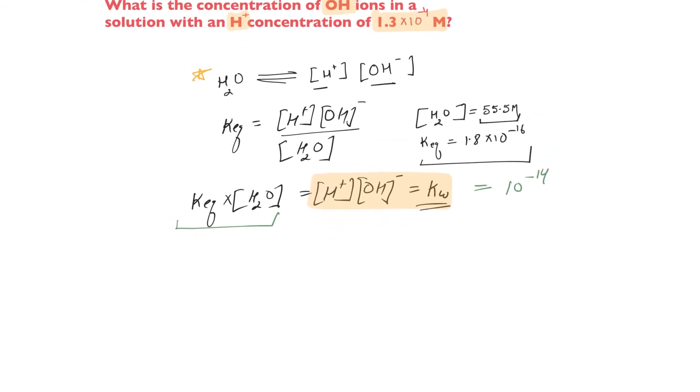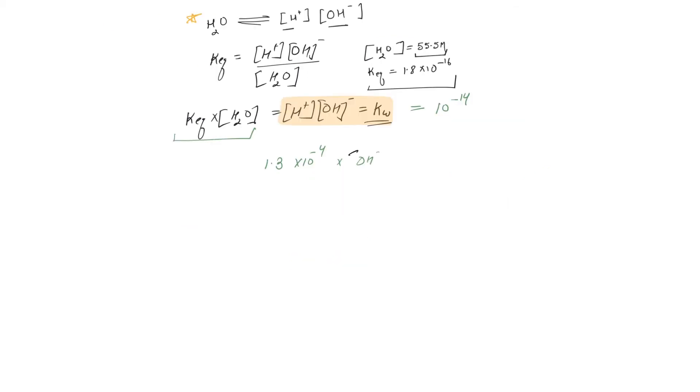The problem says H plus ion concentration equals 1.3 times 10 to the power minus 4, and we don't know OH minus ion concentration. And we know the product should be 10 to the power minus 14. It's very simple to be exact.